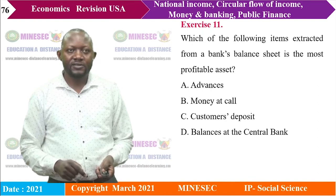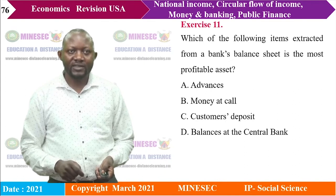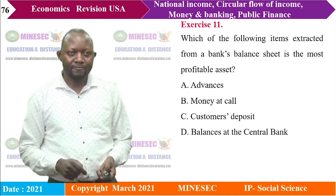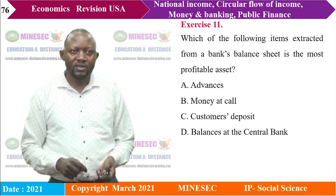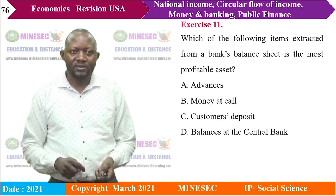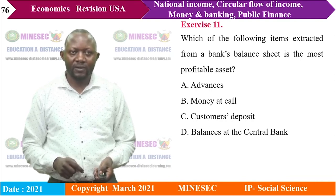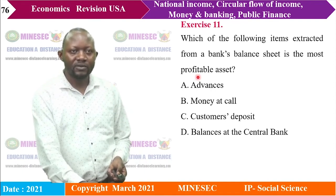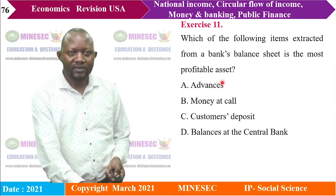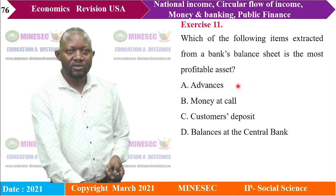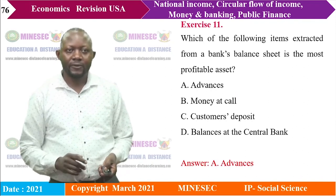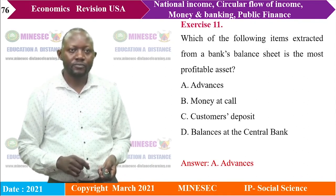Exercise 11: Which item from a bank's balance sheet is the most profitable asset? A) advances, B) money at call, C) customers' deposits, D) balances at the central bank. The most profitable asset is advances, as they represent loans given to customers at interest. The right answer is A.